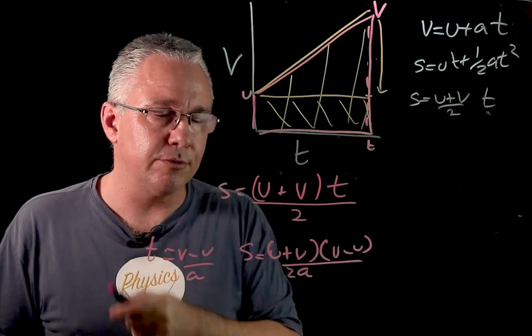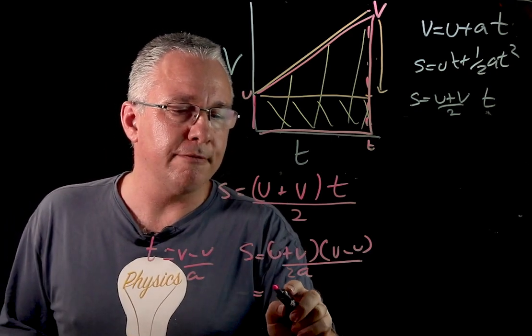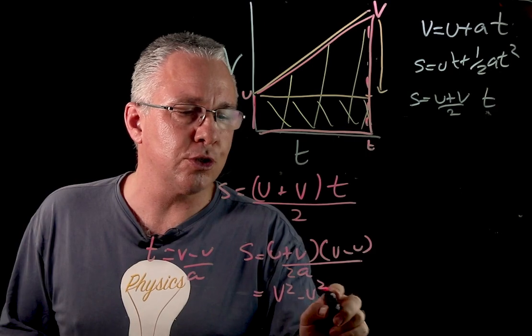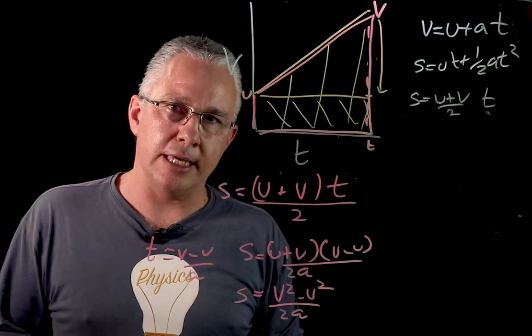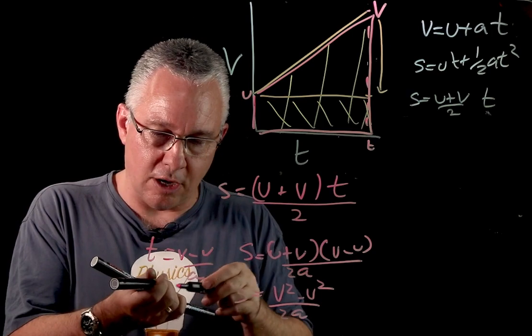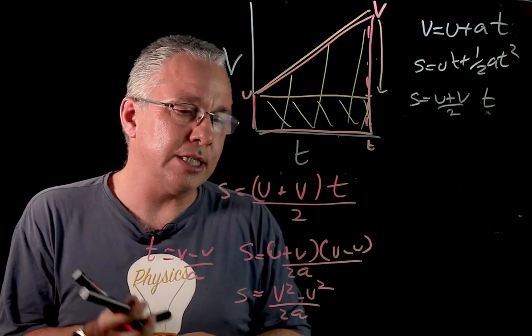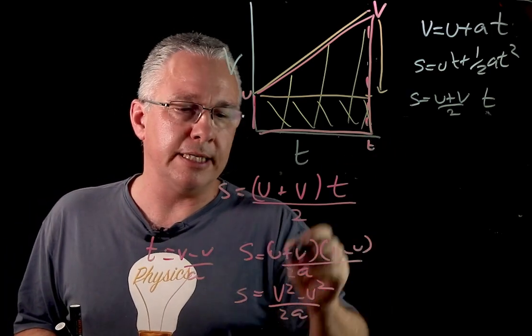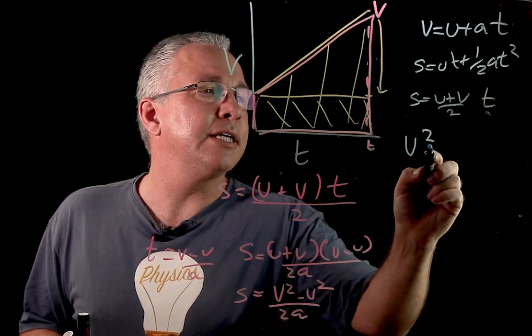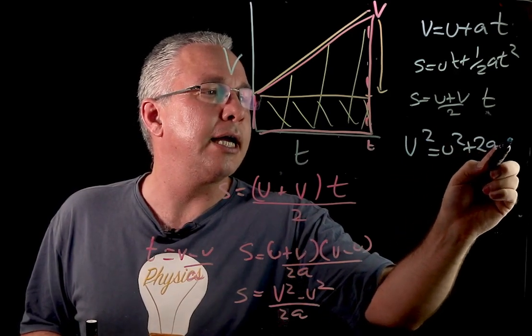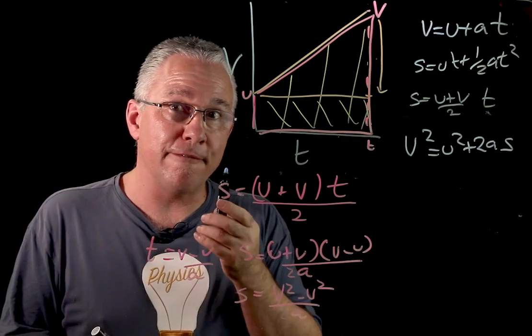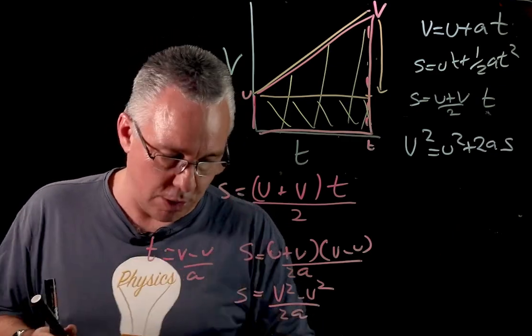And so now I have v squared minus u squared over a, and that is equal to s. Now again, this is often rearranged. And when it's rearranged, we usually make v square our subject. So we get v squared is equal to u squared plus 2as. There is our fourth equation of motion.